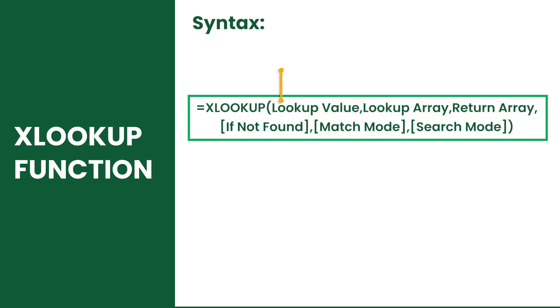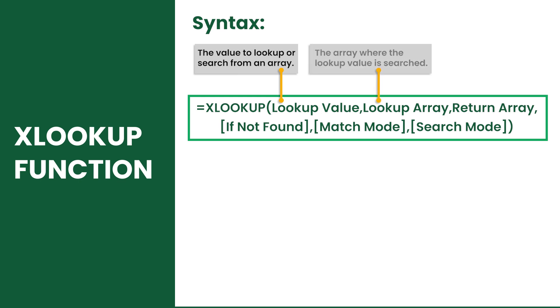The first argument is the lookup value. This is the value that Excel will search from the lookup array, which is the second argument. After searching the value, it will then return a value from the return array, which is the third argument.